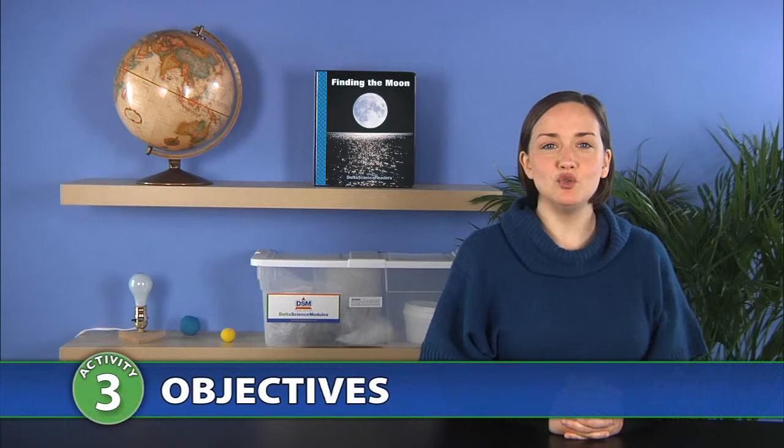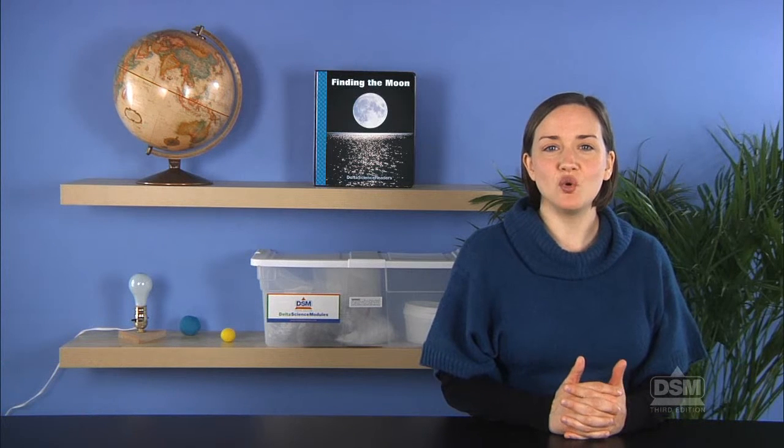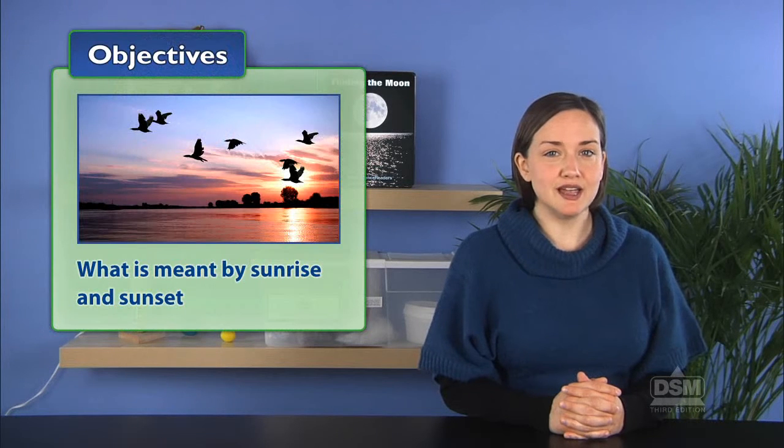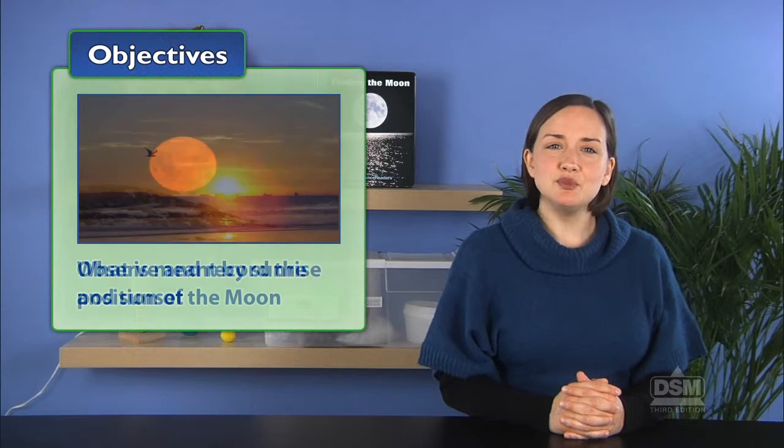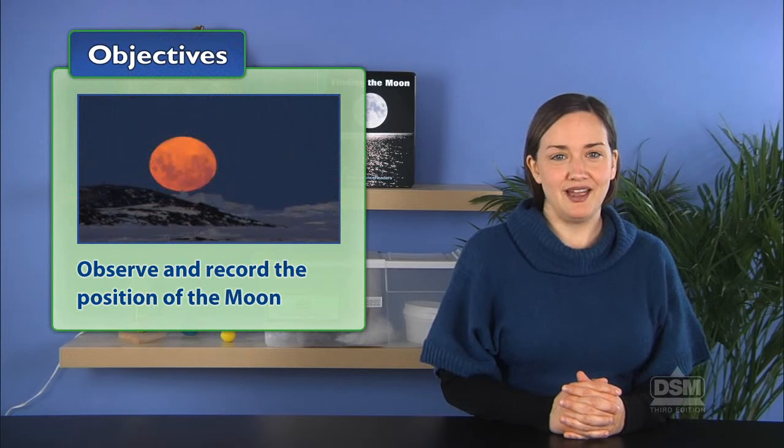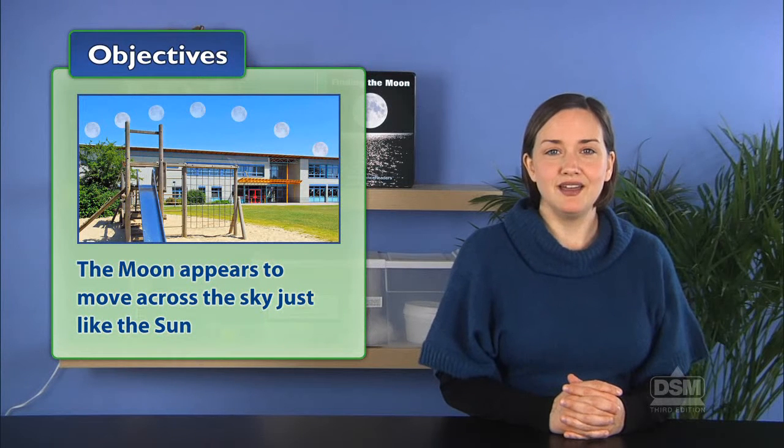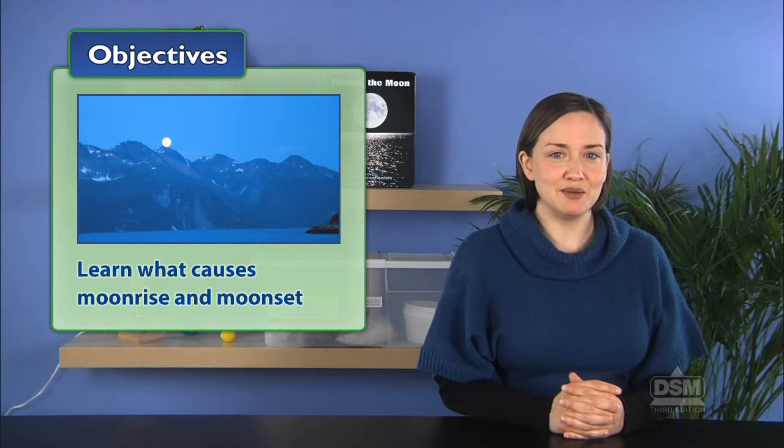In Activity 3, The Moon Rises and Sets, students come to understand the daily motion of the moon by observing its path over the course of a school day. They first discuss what is meant by sunrise and sunset, then observe and record the position of the moon every thirty minutes for several hours and discover that the moon appears to move across the sky just like the sun, and learn what causes moonrise and moonset.